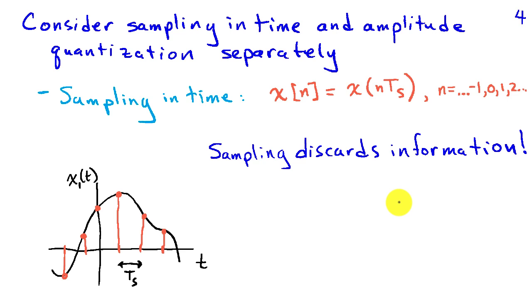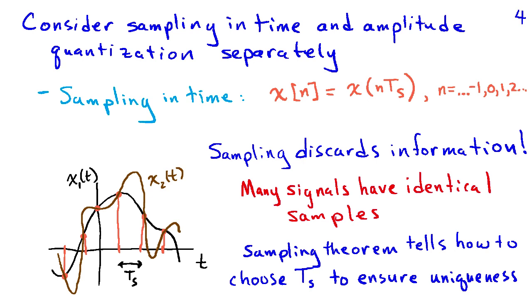Now it is really important to note that when we do this sampling process, we are throwing away information. We are discarding everything about the signal that happened in between the sample times. And as a consequence, there are many signals that have identical samples. So I have sketched in, in brown, x2 of t, a second signal that goes through the same sample values as x1 of t, the one I originally drew in black. So this, you can imagine, could be a potential problem. And there is something called the sampling theorem that tells us how to choose the sampling interval t sub s to ensure that we uniquely represent the signal. And that is particularly important if you want to convert this signal back to continuous time after you have sampled it.